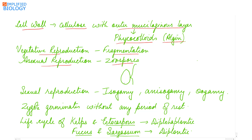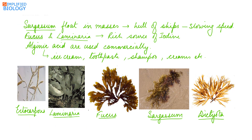Vegetative reproduction is by fragmentation. Asexual reproduction is by zoospores, which are pear-shaped and laterally biflagellated. Sexual reproduction includes isogamy, anisogamy, and oogamy; even the gametes are laterally biflagellated. The zygote germinates without any period of rest. The life cycle of kelps and Ectocarpus is diplo-haplontic, while that of Fucus and Sargassum is diplontic. Sargassum is found floating in the seas in masses, and can get entangled to the hull of ships, slowing down their speed, making them a nuisance in the oceans.